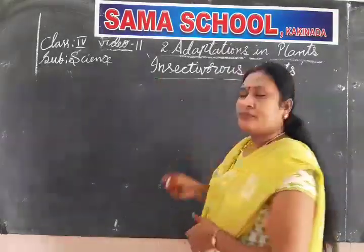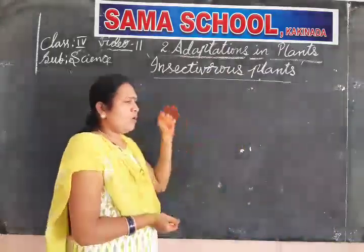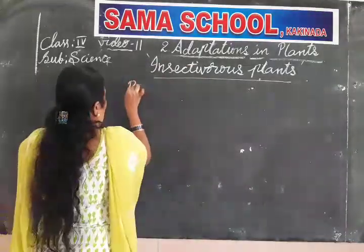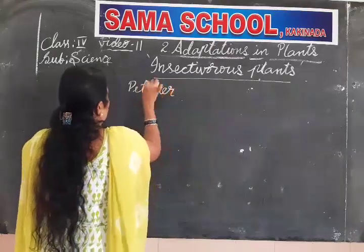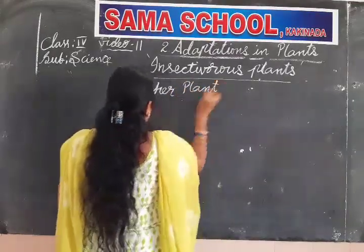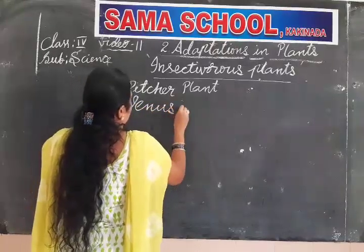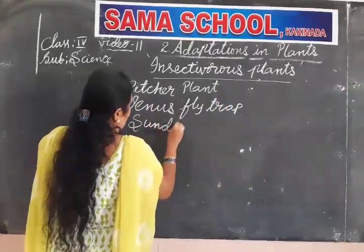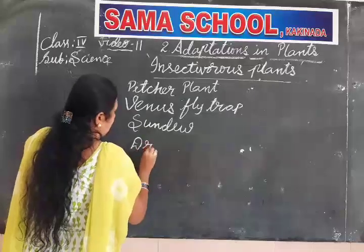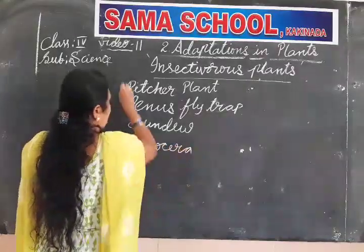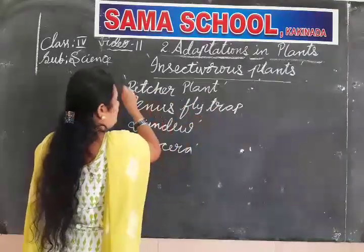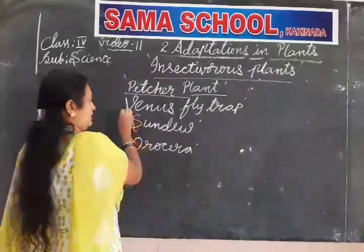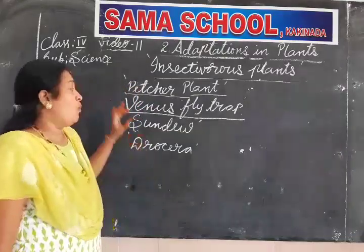In the previous class we already learnt one example. What are the plants in insectivorous plants? Pitcher plant, Venus flytrap, Sundew, and Drosera. These are some of the examples of insectivorous plants. We already learned the pitcher plant features in the previous class. Now we are going to learn one more plant.